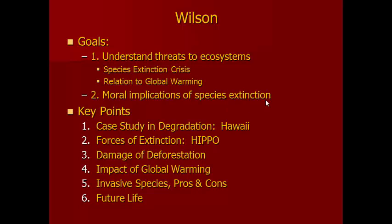Our goals here are to understand the different threats to the ecosystem and specifically the species extinction crisis, which is intimately related to the global warming crisis, and to think about some of the moral implications of species extinction. Our key points include: Hawaii as a case study in ecosystem degradation, Wilson's HIPPO framework for forces of extinction, deforestation, the impact of global warming, invasive species, and philosophical choices for humanity regarding the future of life.